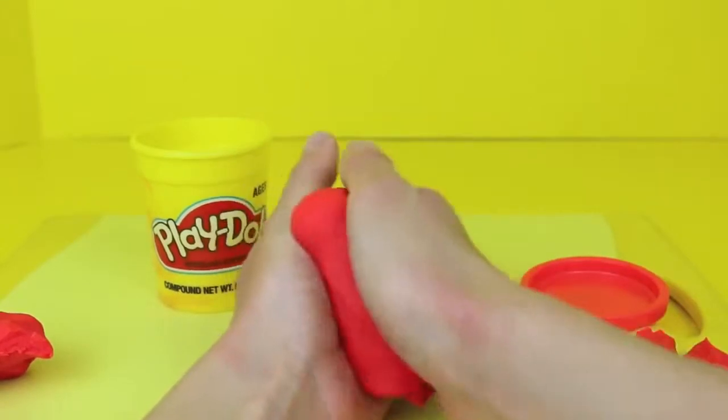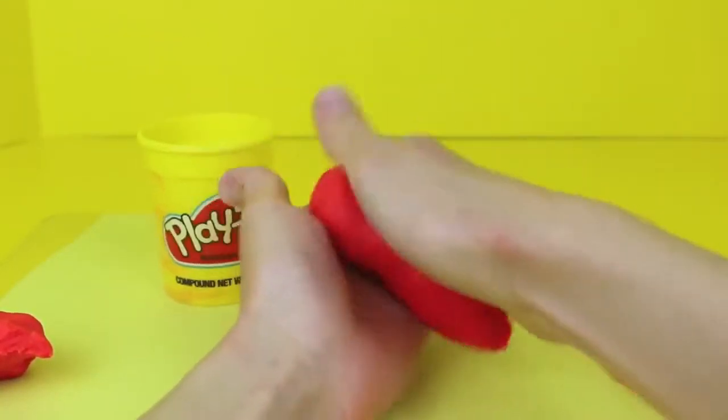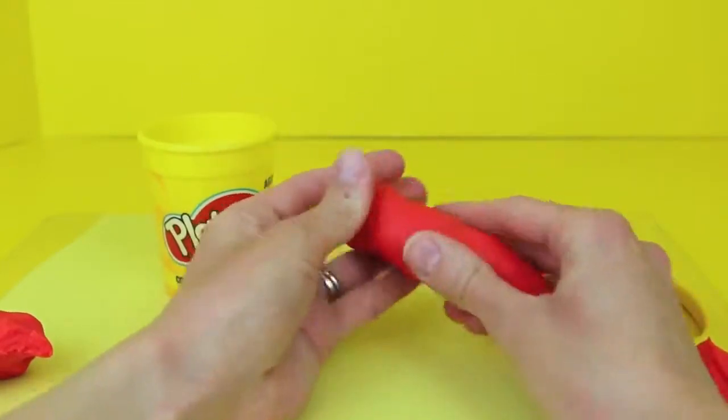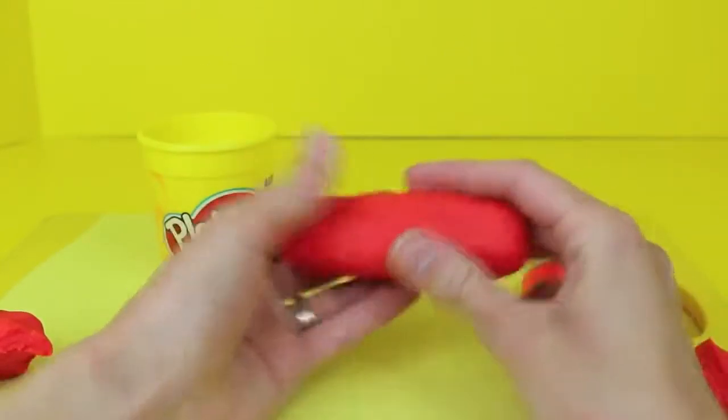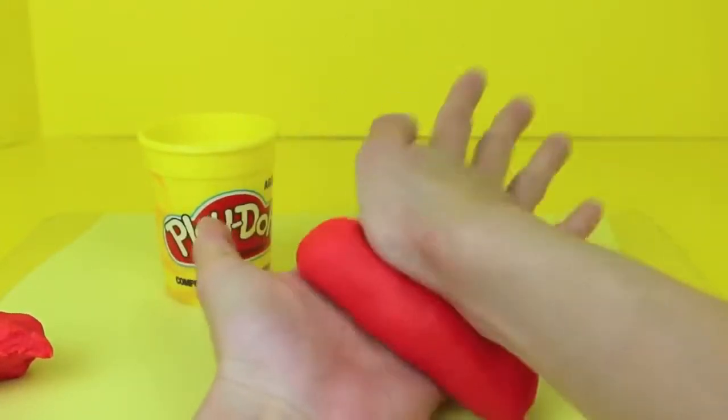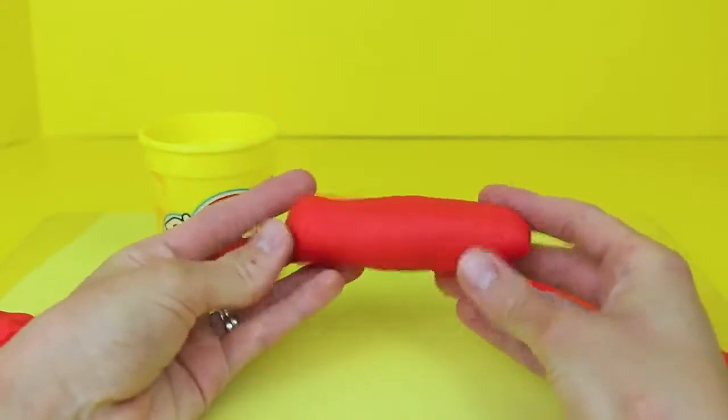Just in your hand roll out the Play-Doh into the shape of a hot dog. This is pretty easy. You'll want to roll it a lot just to make sure it's nice and smooth and then also pay attention to the ends. Make sure they're rounded. There you go. That ought to do it.